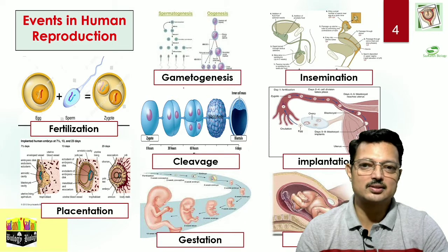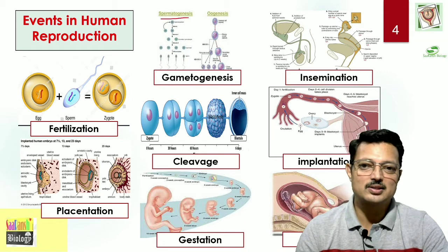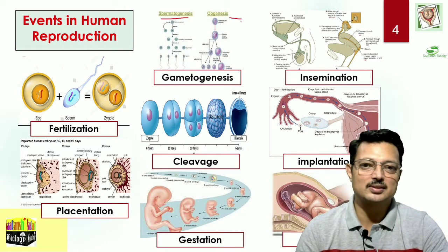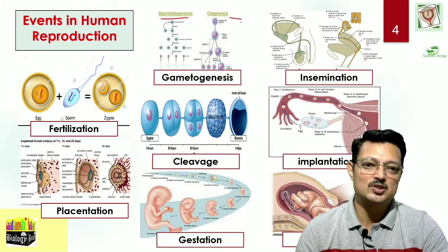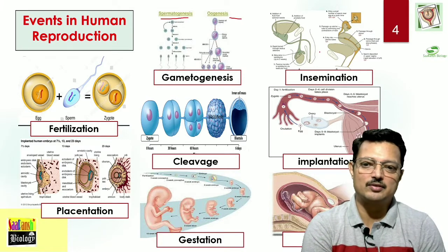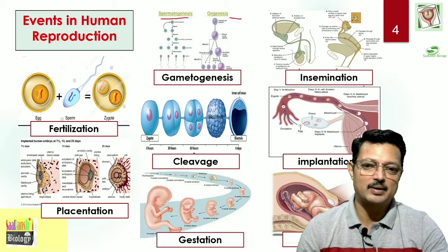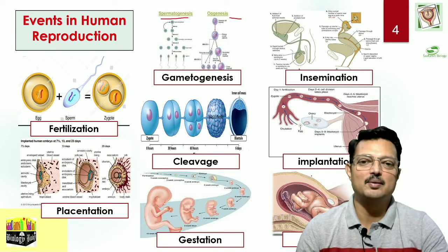In gametogenesis, the formation of the male gamete comes under spermatogenesis, whereas the formation of the female gamete comes under oogenesis. The female gamete is the ovum and the male gamete is the sperm. After gametogenesis, we look into insemination, fertilization, cleavage, implantation, placentation, gestation, and parturition.